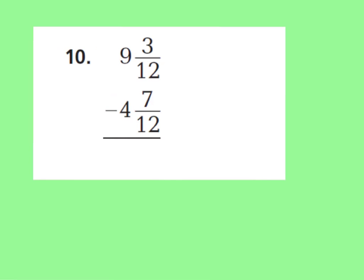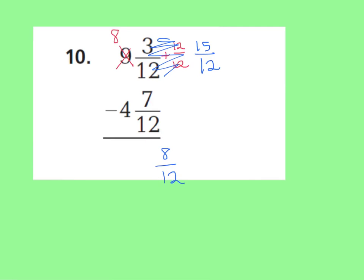If you tried this one on your own, you should have done this: I cannot take 7 twelfths from 3 twelfths, so I need to regroup and borrow a whole from my 9 wholes and make it 8 wholes. Now I'm going to add a whole to my 3 twelfths — because I took away a whole, I can add a whole. I want to call this 3 twelfths plus 12 twelfths, which equals 15 twelfths. So now this is renamed as 8 and 15 twelfths minus 4 and 7 twelfths. Subtracting: 15 twelfths minus 7 twelfths equals 8 twelfths. Then 8 minus 4 is 4. So the answer is 4 wholes and 8 twelfths.